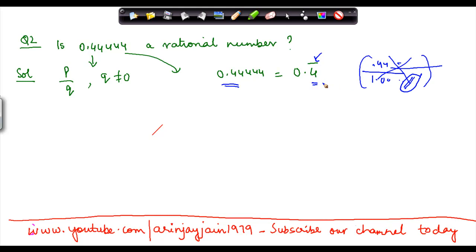Okay, so here basically what we do is we assume that let 0.4 bar be a rational number equal to x. So if this is a rational number, let's say the value of that rational number is x. We know that the value of this rational number is 0.4444 and so on.